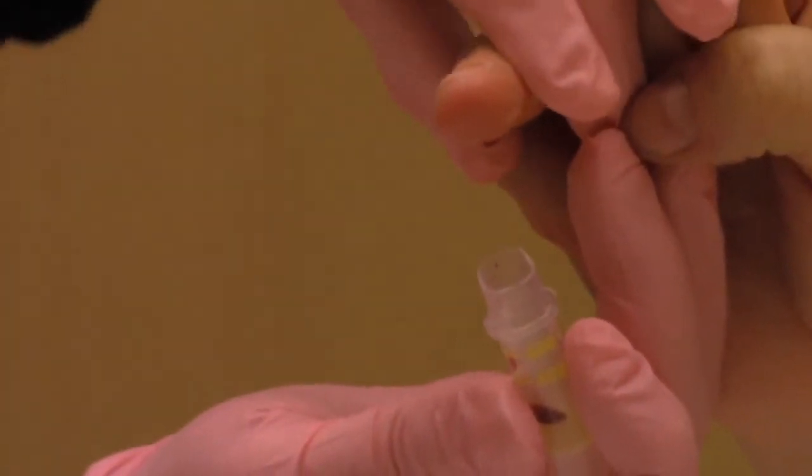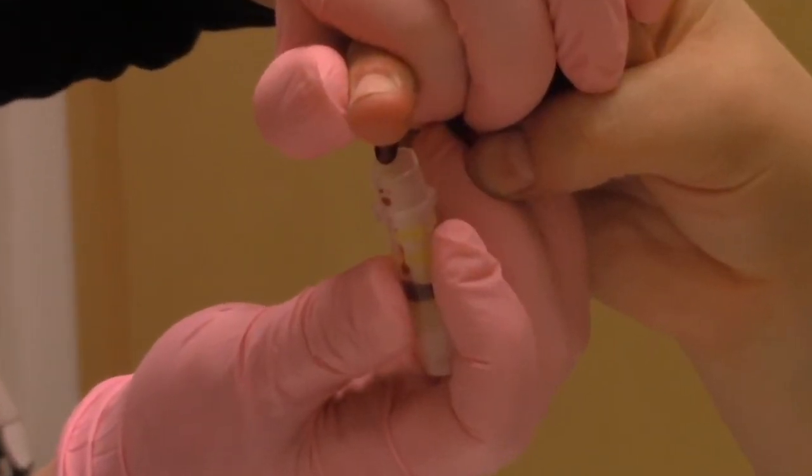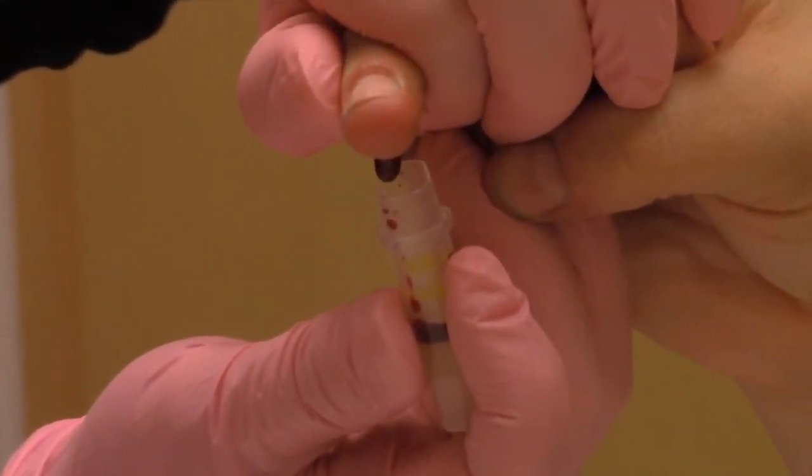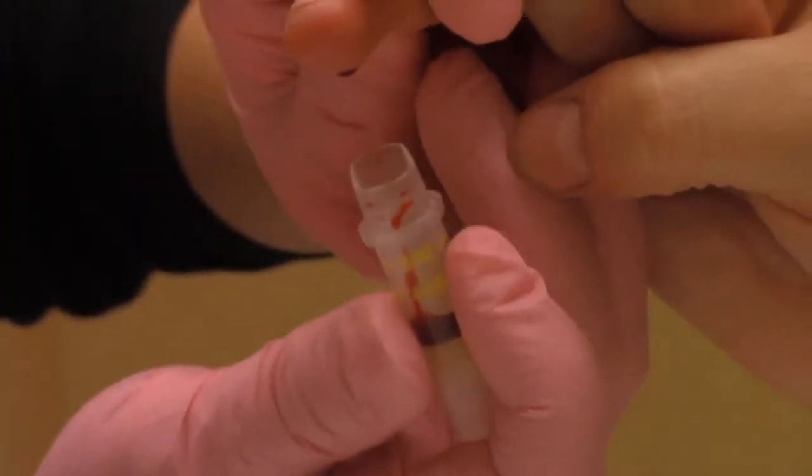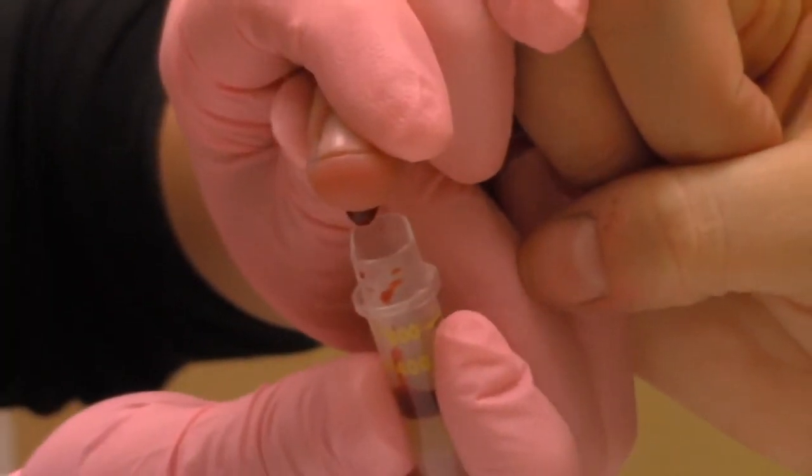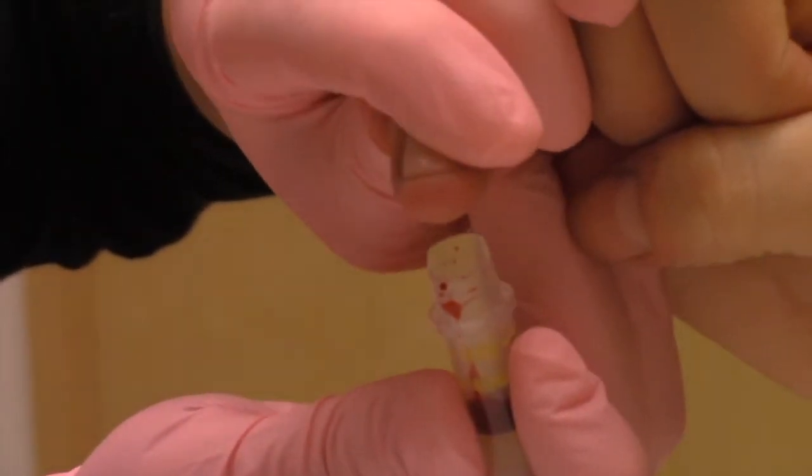Begin milking the fingertip like so and collecting the blood in the tube. If the finger doesn't seem to be bleeding enough you can hang the hand down below the heart to let gravity help with the blood flow. You can use the gauze to clean up the finger if it is getting messy and to improve blood flow into the tube.